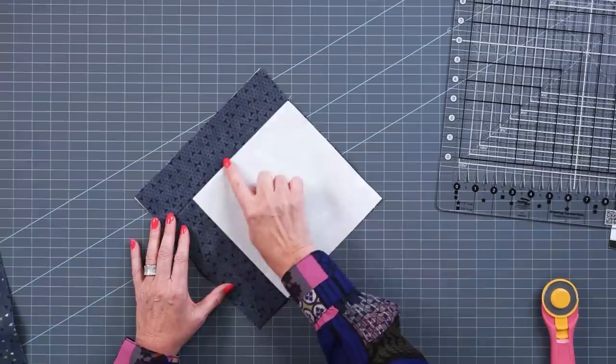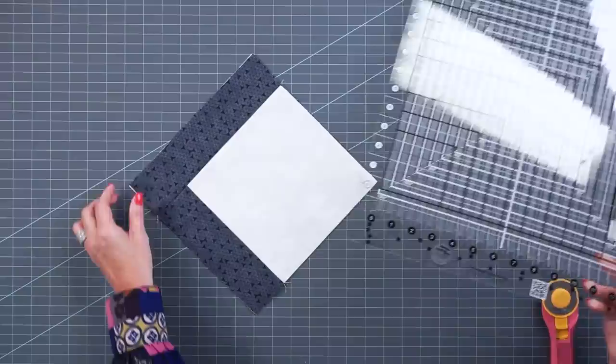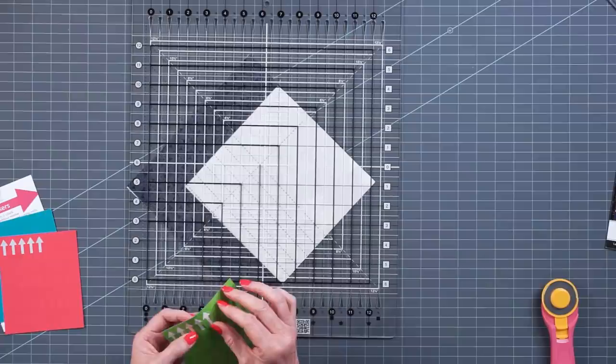You can feel them kind of falling together. And so then we're going to take a ruler and lay it on top of this layered unit here. You want to make sure that you turn it the right way.